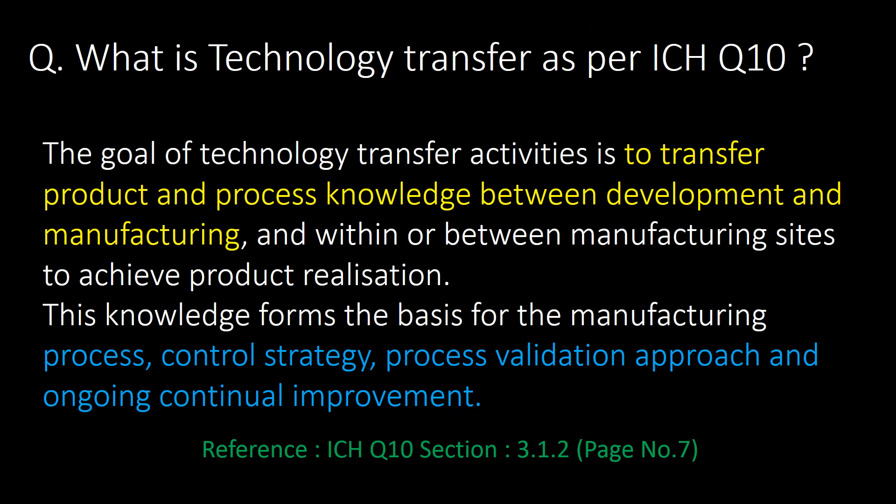What is technology transfer as per ICH Q10? The goal of technology transfer activities is to transfer product and process knowledge between development and manufacturing, and within or between manufacturing sites, to achieve product realization. This knowledge forms the basis for the manufacturing process control strategy, process validation approach, and ongoing continual improvement.